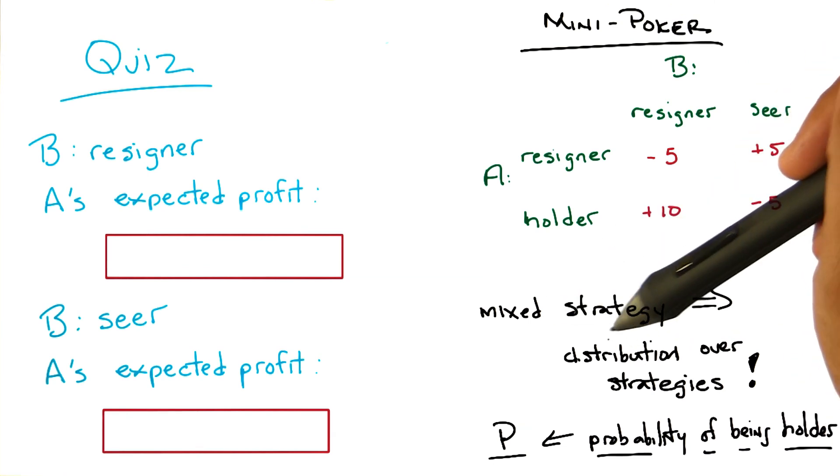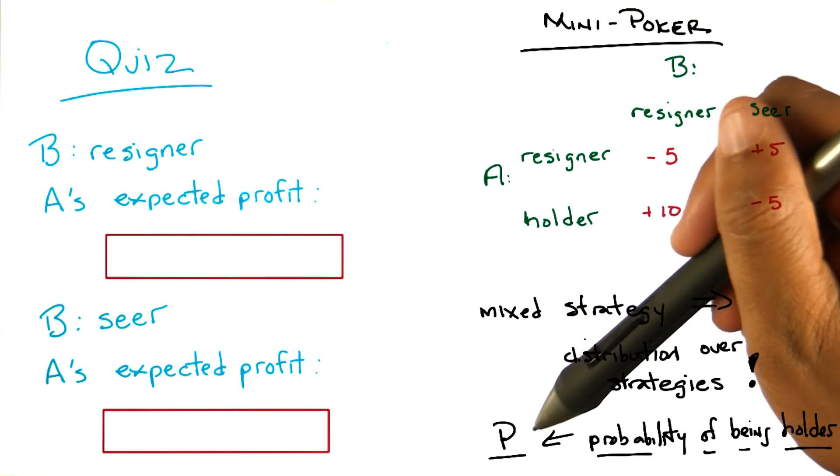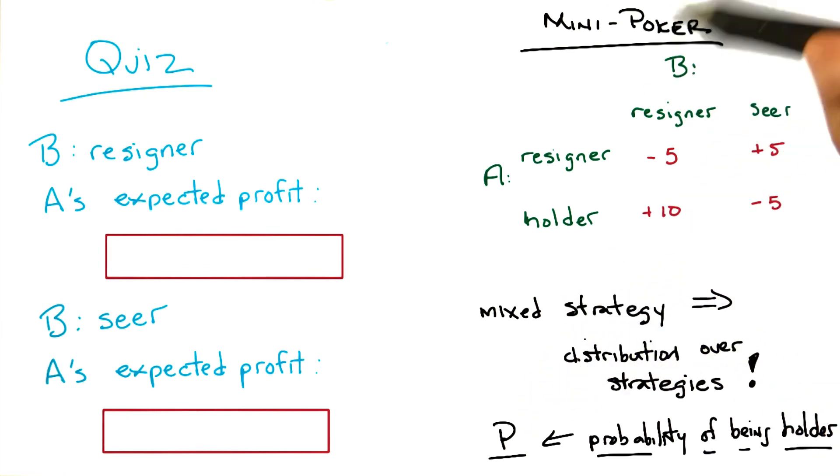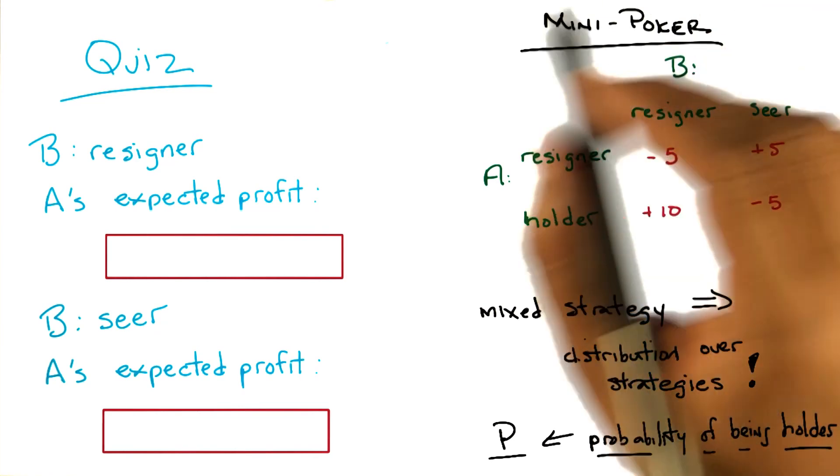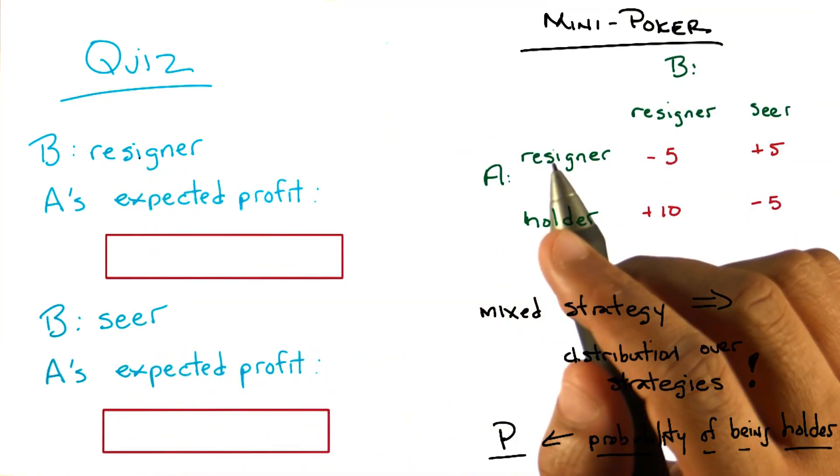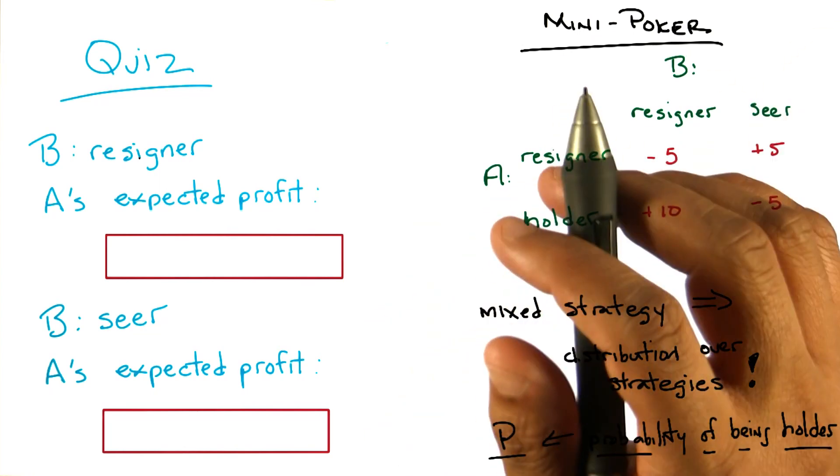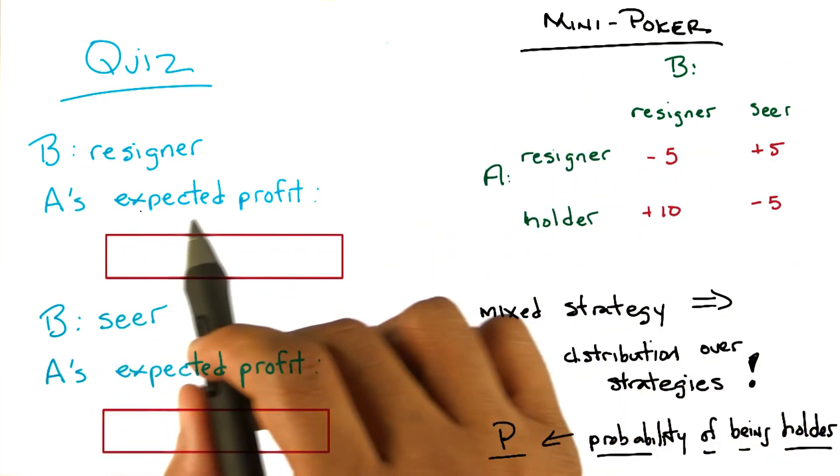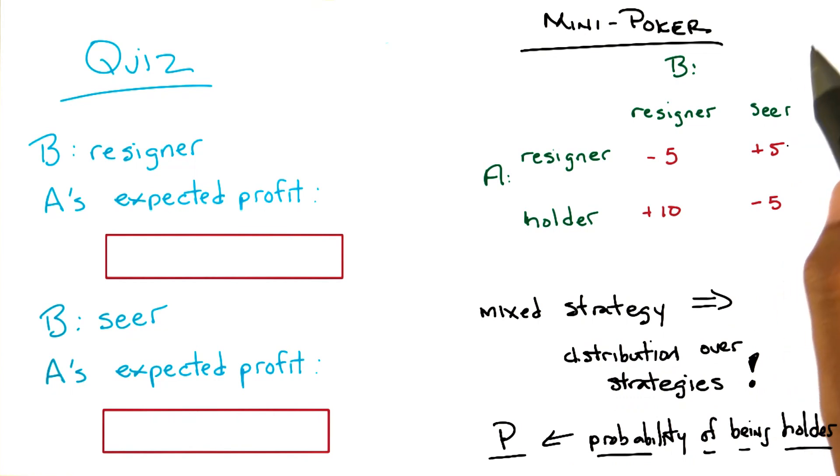Okay, so given that we have a mixed strategy, and we have a probability P of A being a holder, here's my question for you. In a world where B is a resigner, okay, B is always going to choose to resign, what is A's expected profit? To make it easy for you, I copied the matrix over here in the upper right hand corner.